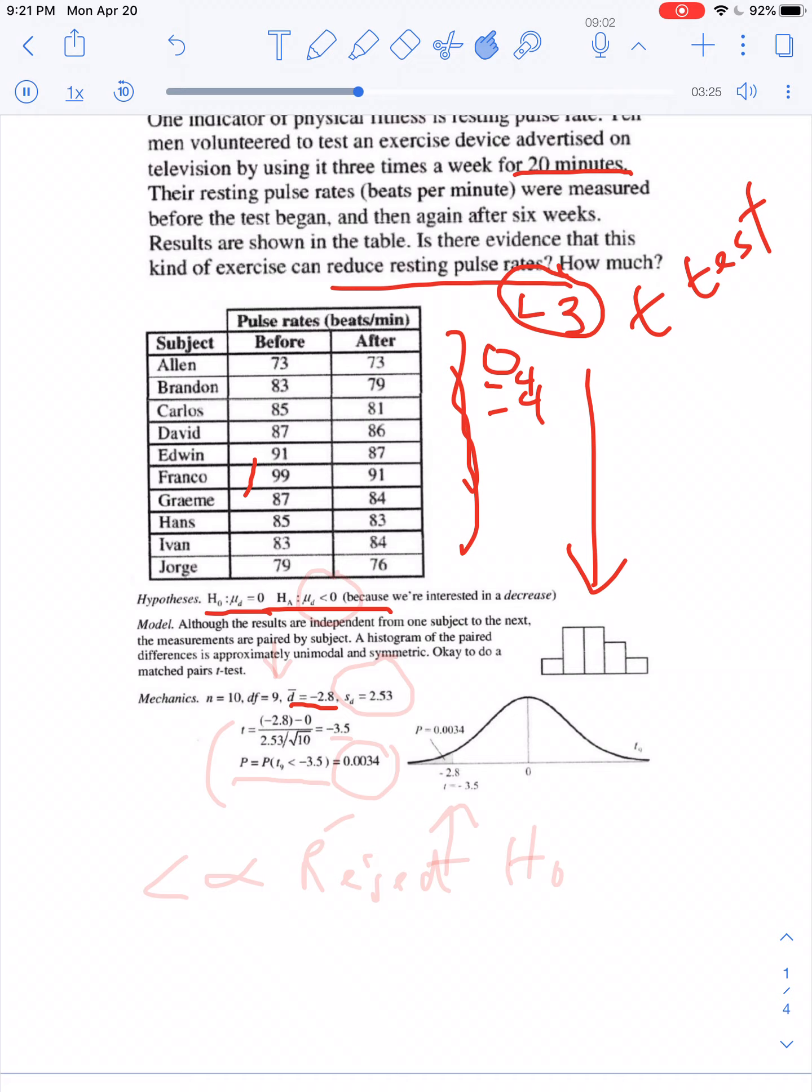So here's what we do down here with the work. t would be negative 2.8 minus 0 divided by the standard deviation. The standard deviation of the L3, which you get off your calculator if you put it in a one-var stat, is 2.53 divided by the square root of 10, because there's 10 people in our sample. This gives you a t-score of negative 3.5 right there. It's kind of small.